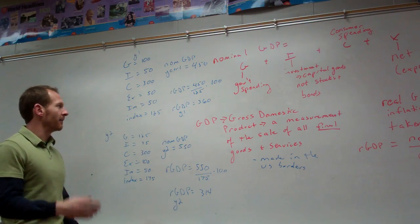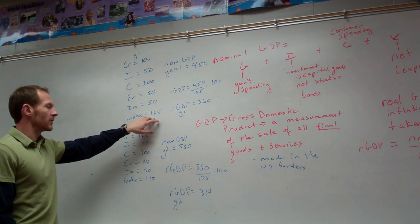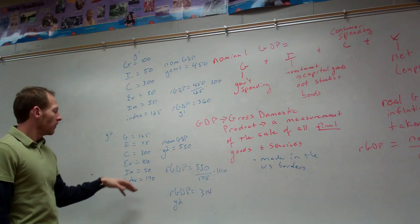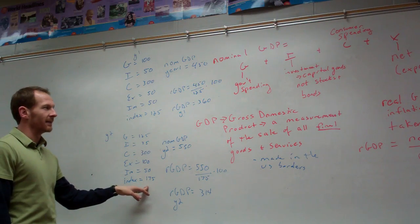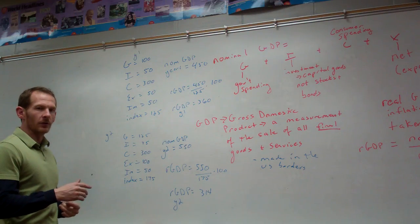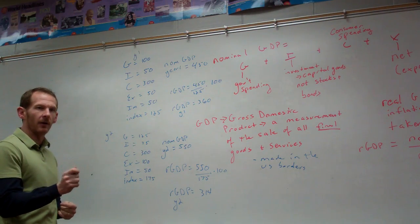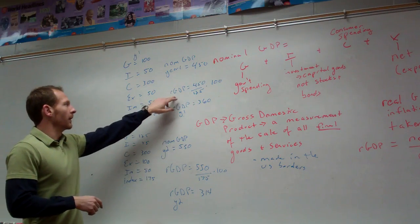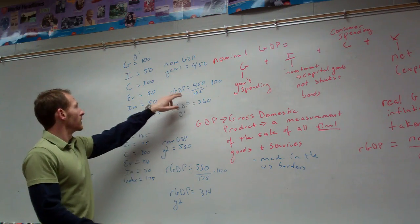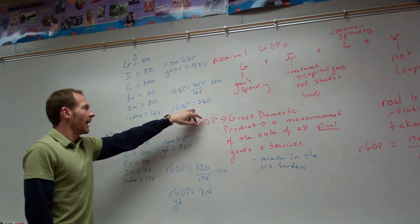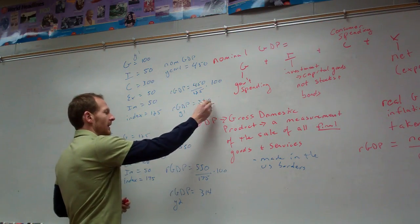That's before we back out inflation, because the price indexes, the measurement of inflation is only 125 for year one, whereas the price index in year two is 175. So, if we use the equation we just learned where real GDP equals nominal GDP over the price index times 100, we see that real GDP is 450, which is the nominal, over the price index is 125 times 100, and our real GDP ends up being 360.